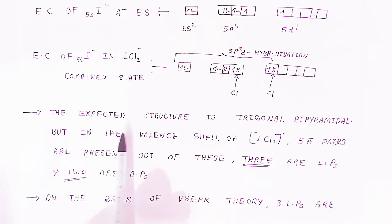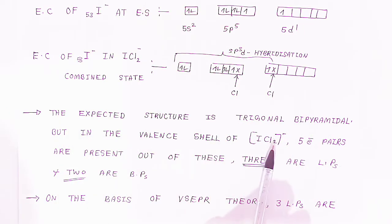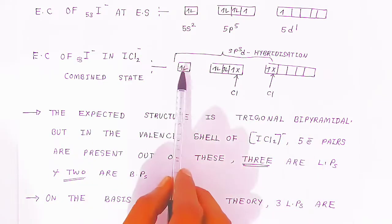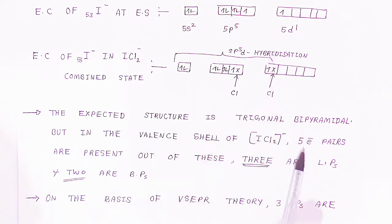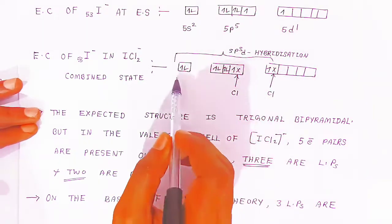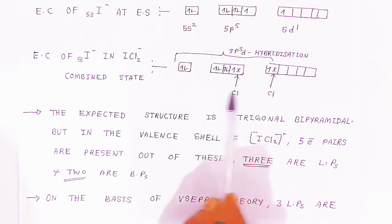The expected structure is trigonal bipyramidal. In the valence shell of ICl₂⁻, 5 electron pairs are present. Out of these 5 electron pairs, 3 are lone pairs and 2 are bonding pairs with the chloride atoms.